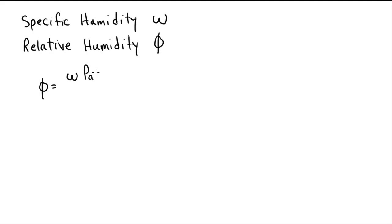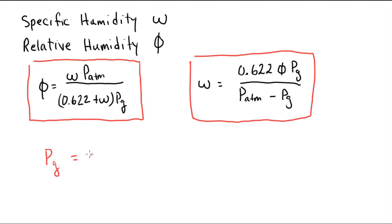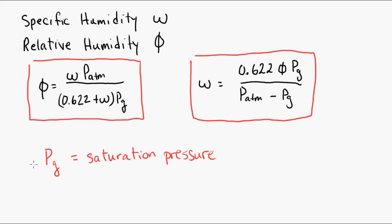And we can relate these two to each other. In other words, we can calculate one from the other, knowing the atmospheric pressure and the saturation pressure. So omega is given by 0.622 phi times the saturation pressure, divided by the atmospheric pressure, subtract the saturation pressure. So these two formulas are probably good to write down or bookmark in your textbook, because they're handy for converting one to the other. And again, PG is the saturation pressure of the mixture.